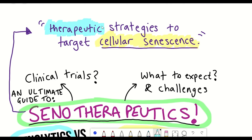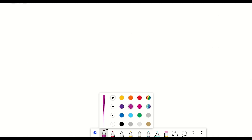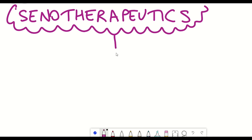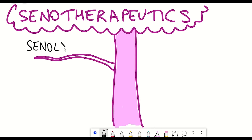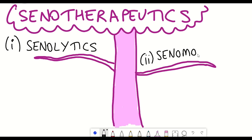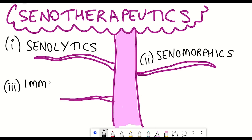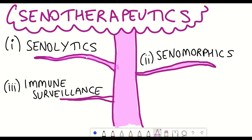This brings us back to whether targeting senescent cells could have therapeutic potential — and the term senotherapeutics. So far, there are three different branches of senotherapeutics: senolytics, senomorphics, and ways of activating or modifying the immune system to specifically target senescent cells — exploiting the body's natural immune system to eliminate them.